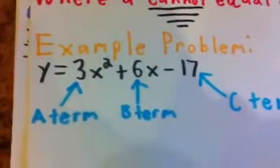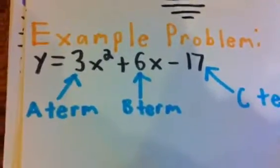The example problem is y equals 3x squared plus 6x minus 17, where 3x squared is the a term, 6x is the b term, and negative 17 is the c term.